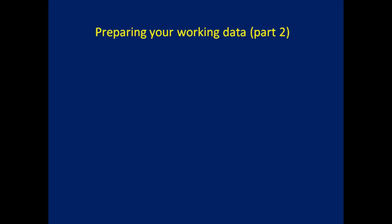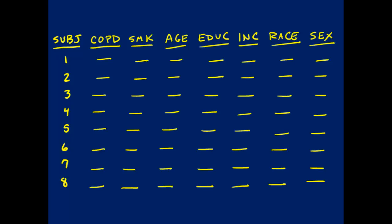The purpose of this video is to get you to be able to take all of the different datasets that you have downloaded and to merge them and stack them into a single working dataset. We looked before at a representation of what my working data might look like for my COPD model, with the different variables I'm going to be using, including my outcome variable, my exposure variable, and all of the variables on which I want to condition my model.